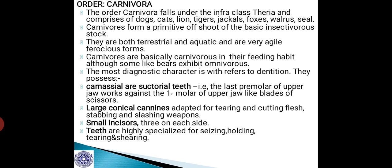The order Carnivora falls under the infra class Theoria and it comprises of dogs, cats, lions, tigers, jackals, foxes, walrus, seal, etc. Carnivoras form a primitive offshoot of the basic insectivora stock, meaning they have almost the same type of origin as that of insectivora, which we have already discussed.